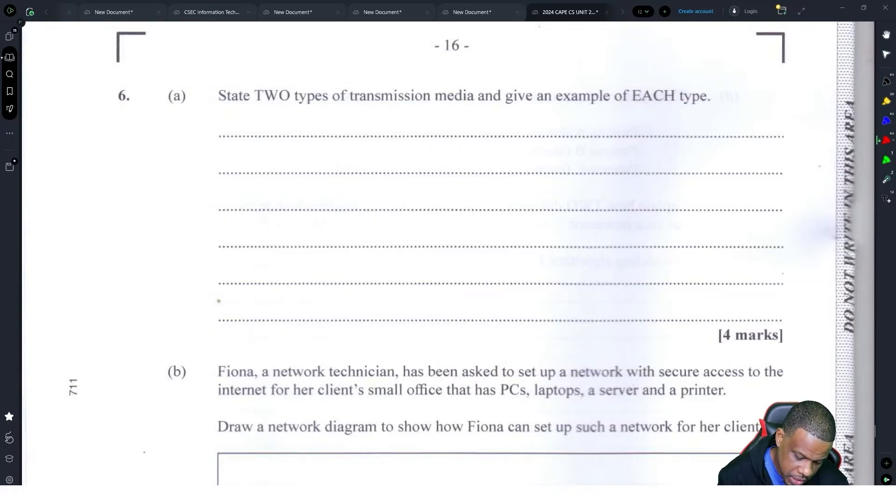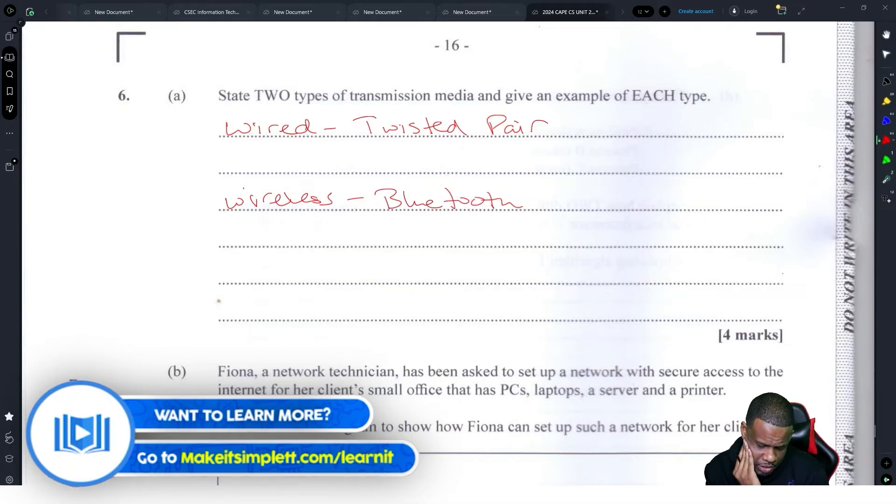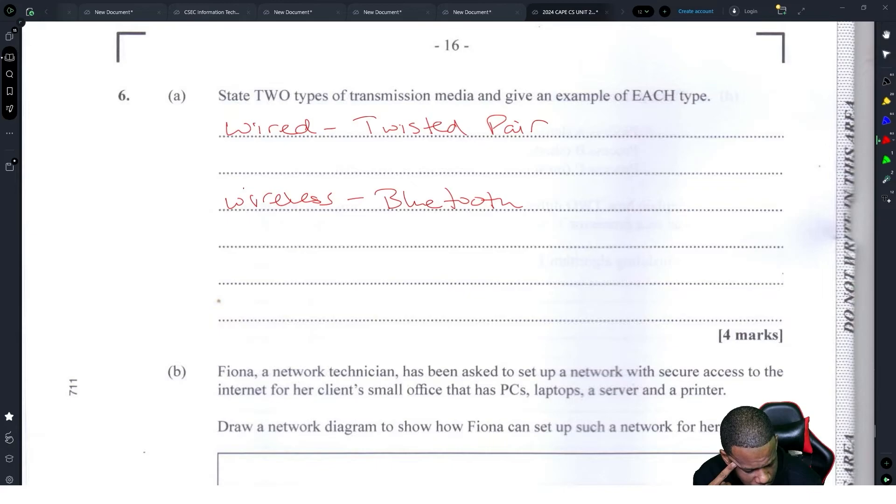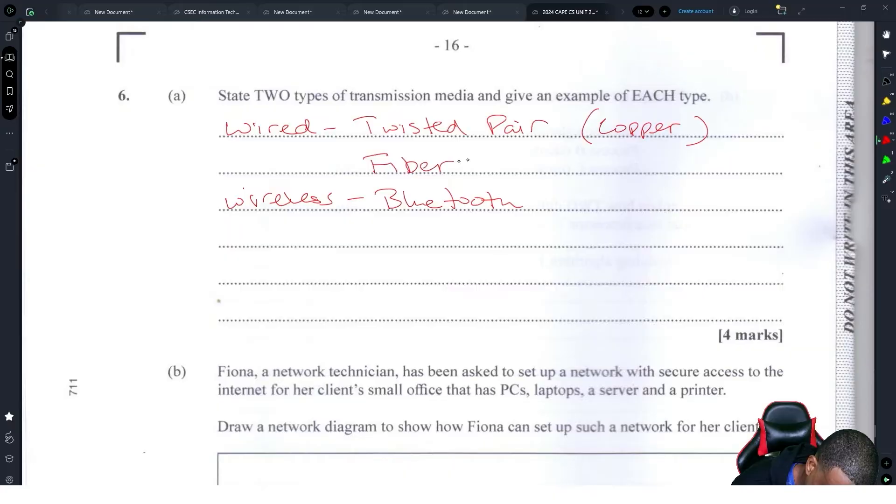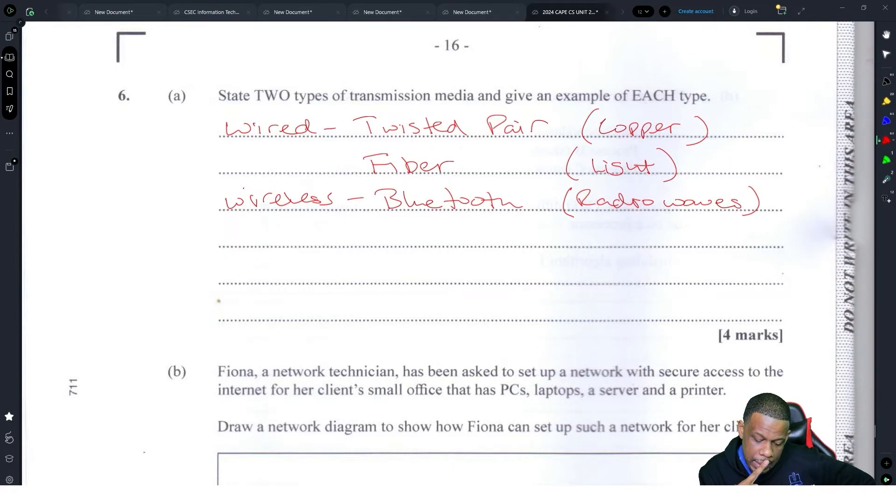Number six. State two types of transmission media and give an example of each. There's wired and wireless. Wired to stick here, and wireless Bluetooth. Types of transmission media is wired and wireless, right? Or maybe they're looking for copper and then fiber, which will be light, and then Bluetooth will be radio waves. Transmission media, I think it should be copper and light.